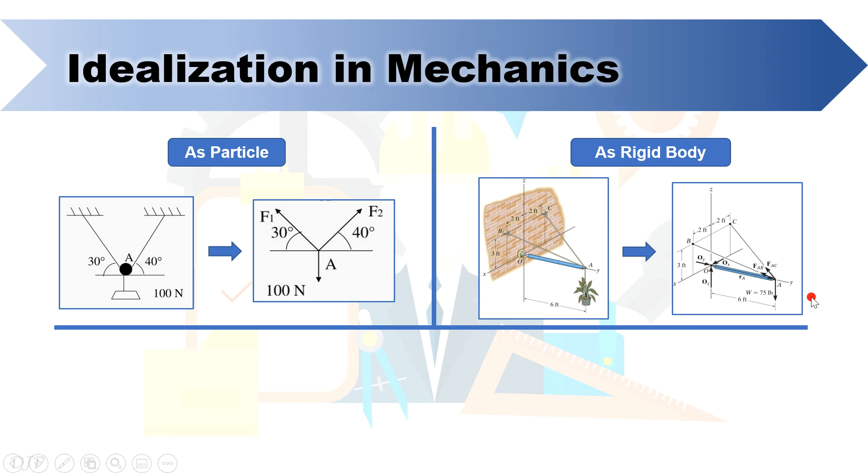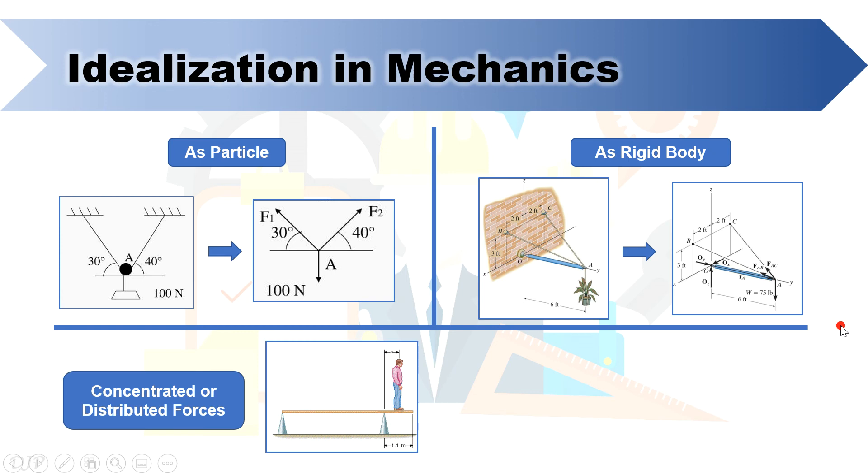In mechanics, it is not only bodies that can be idealized to simplify the analysis. Reaction forces and applied forces exerted by a body to another body can also be idealized as either concentrated or distributed forces. The first example shows a man standing on a plank. When analyzing the forces exerted on the plank, you may idealize the weight of the man as concentrated force or purely acting on a particular point on the plank. This assumption simplifies the computation that might involve calculating the total area of the contact of his feet to the plank just to include the concept of pressure.